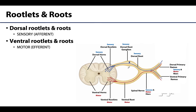Spinal nerves arise from the spinal cord as a series of small rootlets on both the dorsal or posterior as well as the ventral or anterior sides. Note this is really the only time we use the more traditional terms dorsal and ventral rather than anterior and posterior, as this is so ingrained in neuroanatomy — you often see this in textbooks, so we did keep dorsal and ventral here.